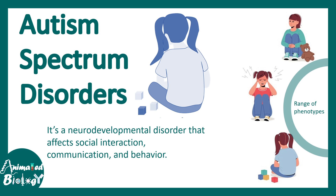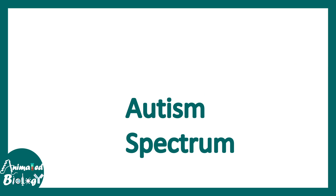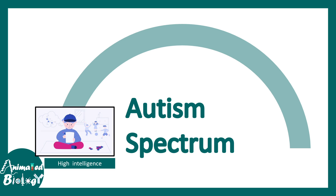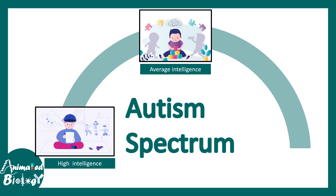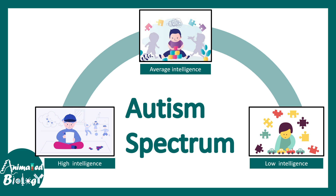Autism results in a range of phenotypes, and that is why it is known as a spectrum. On one side of the spectrum there is high intelligence autism, where children have very high interest in one particular topic and are highly skilled at it. In the middle there is average intelligence where people struggle with problem solving or social interaction, and on the other end is low intelligence, where individuals find it difficult to perform day-to-day tasks, interact with people, or make new friends.